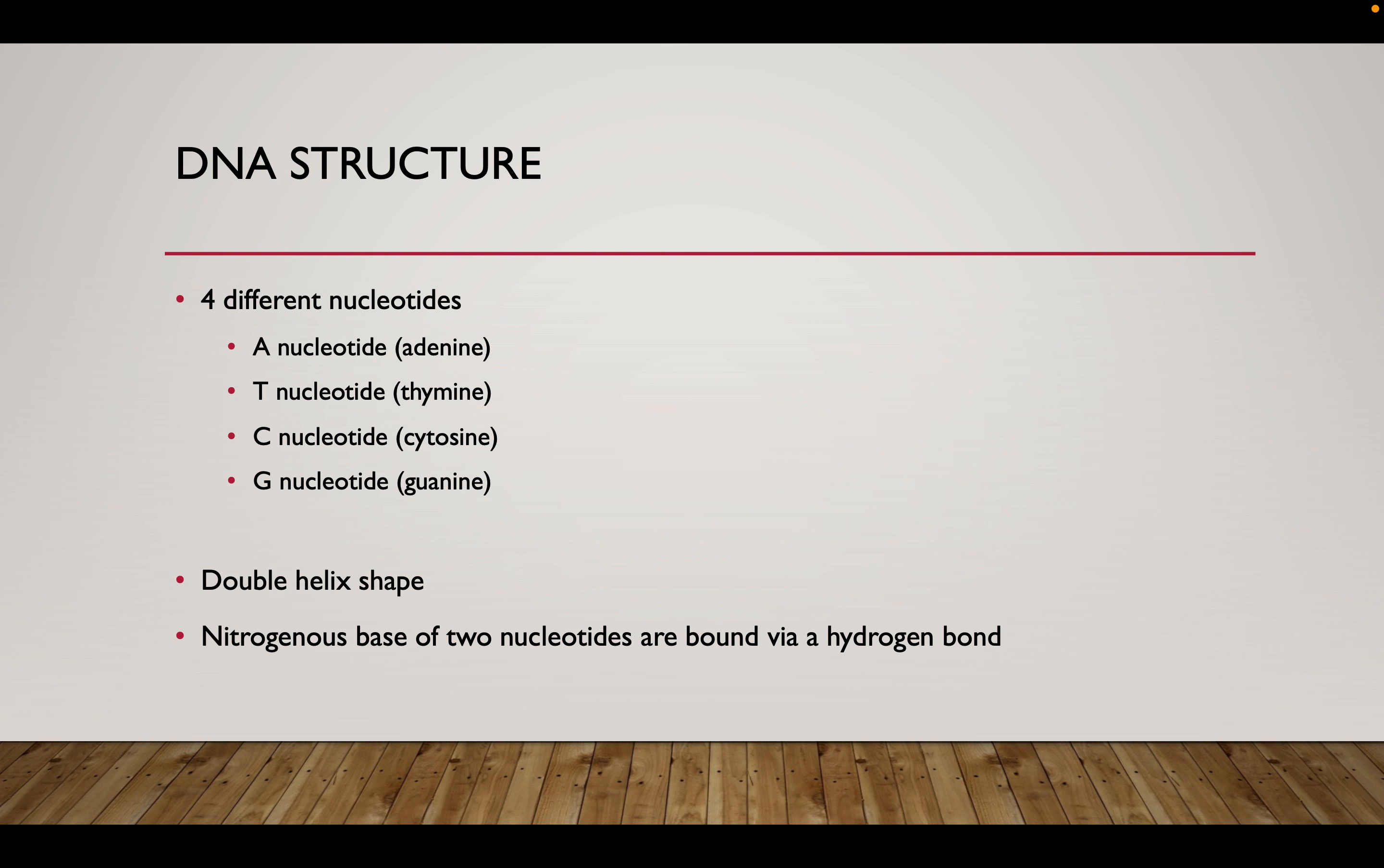It exists in a double helical shape, so two strands twisted around each other. And where these two nitrogenous bases bind and bond together between the A and the T and the C and the G, you get a hydrogen bond. And we know that hydrogen bonds are relatively weak, and this is beneficial whenever we're needing to replicate our DNA because we need to be able to break these bonds.